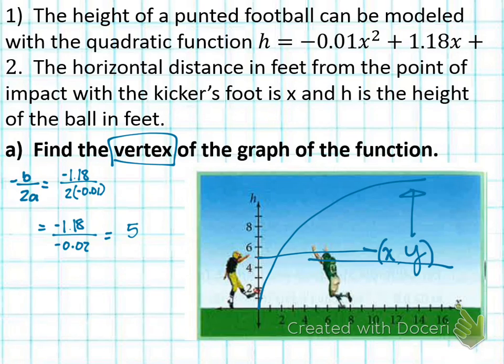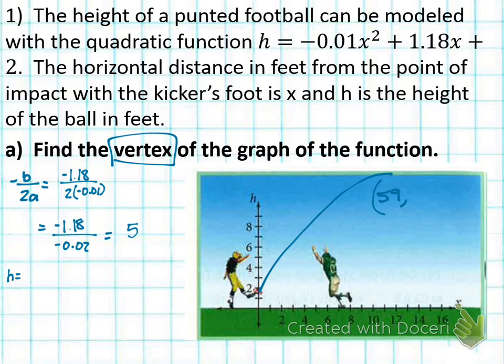My vertex is, the highest point has gone 59 feet as the X. How do I find the Y now? We plug it back in. We go back to our equation H equals, and whenever I see X, I'm going to plug in 59 there. Negative 0.01 times 59 squared plus 1.18 times 59 all plus 2.